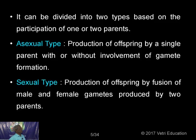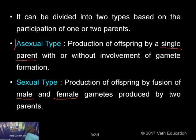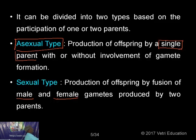Reproduction can be divided into two types based on participation of one or two parents. Asexual type is the production of offspring by a single parent with or without gamete formation. The sexual type is the production of offspring by fusion of male and female gametes produced by two parents. Asexual reproduction means only one parent is involved; sexual reproduction means two parents — male and female — are involved.